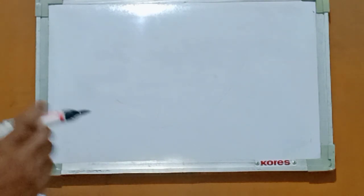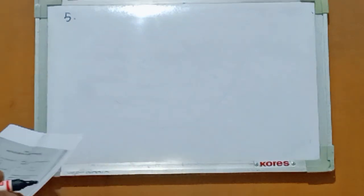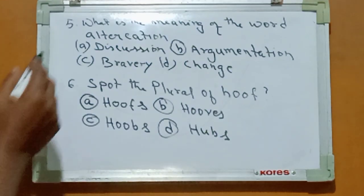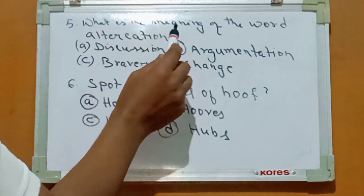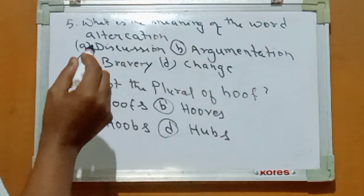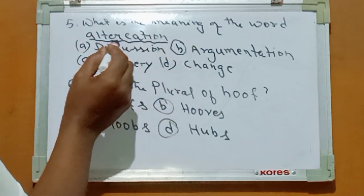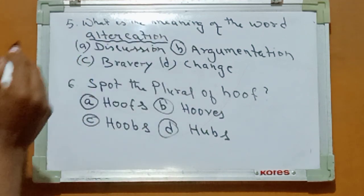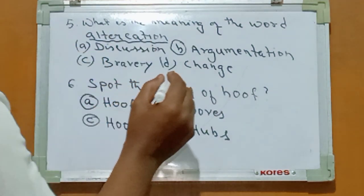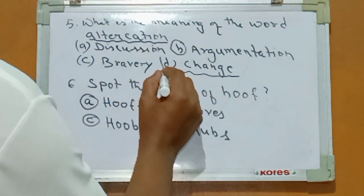Question number five: what is the meaning of the word altercation? A-L-T-E-R-C-A-T-I-O-N. Altercation means change. And your answer is Option D.